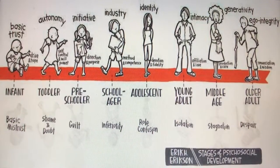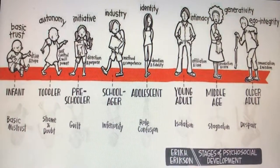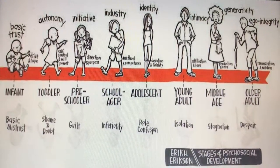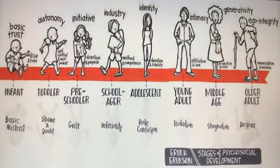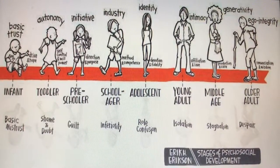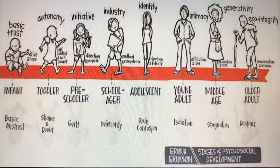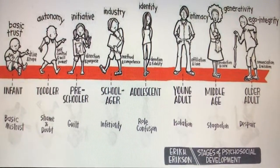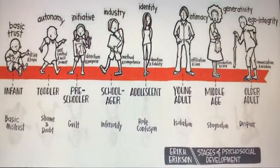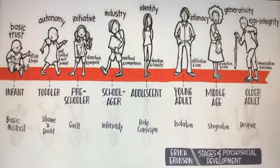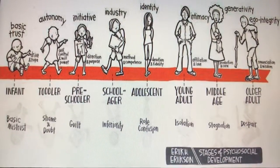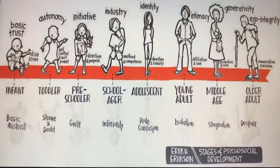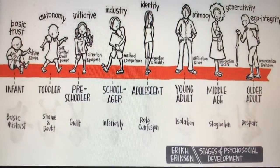The third stage is initiative versus guilt, which is between the ages of 3 to 7 years old, considered to be early childhood. This is where a child initiates action, explores, and imagines, as well as feeling remorse for actions. It's a direction and purpose resolution. Their belief is: I am what I imagine.